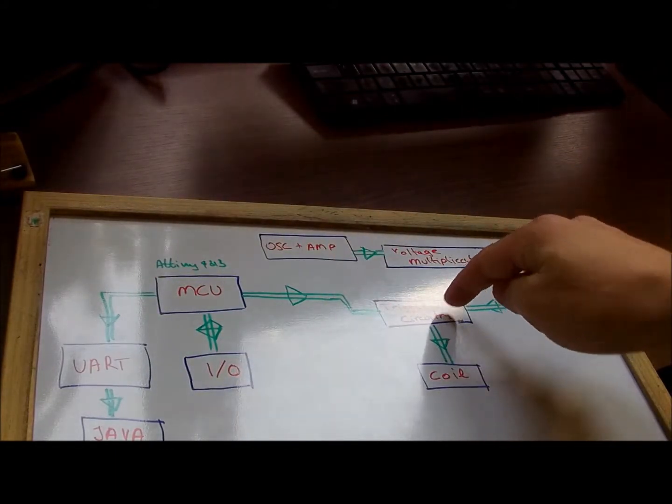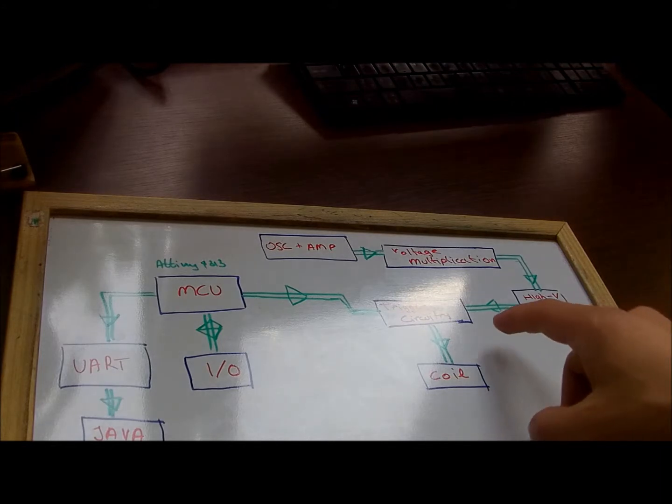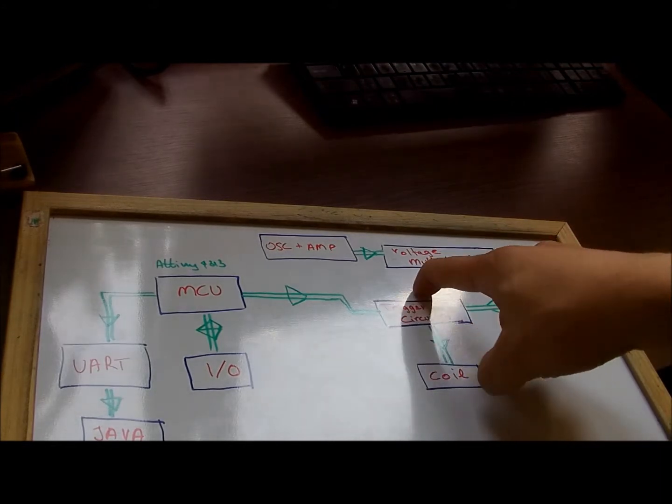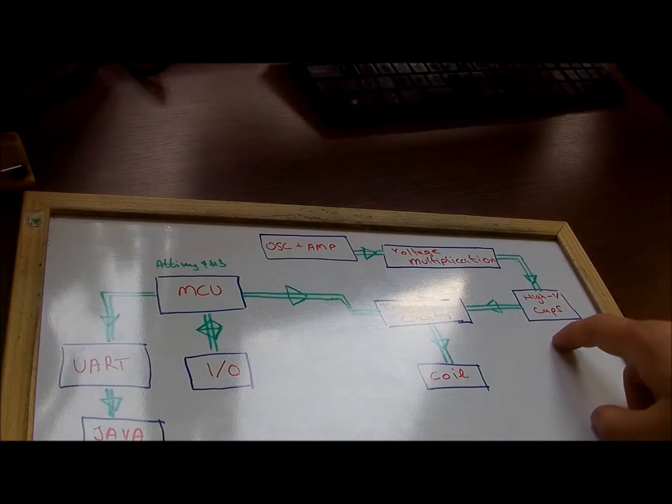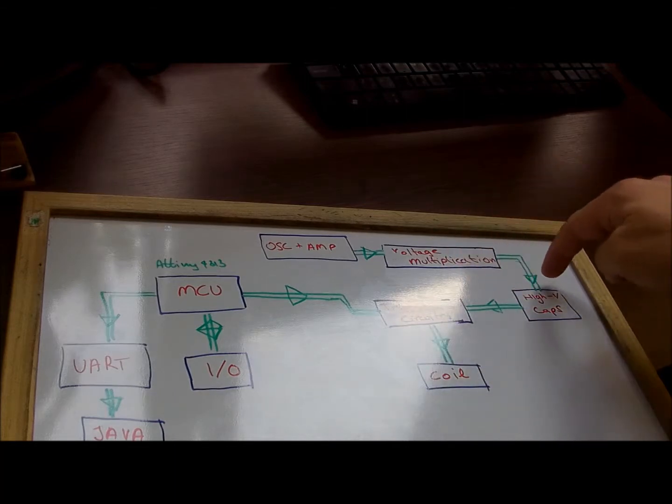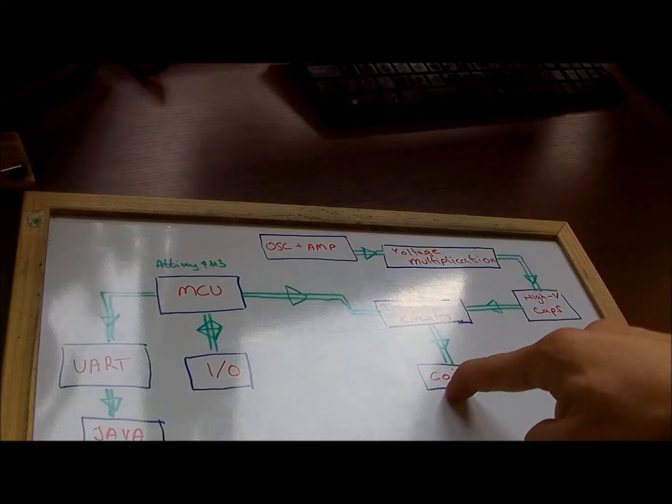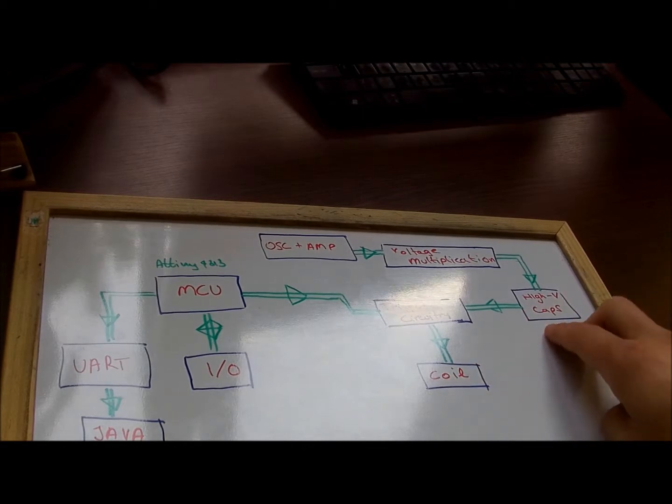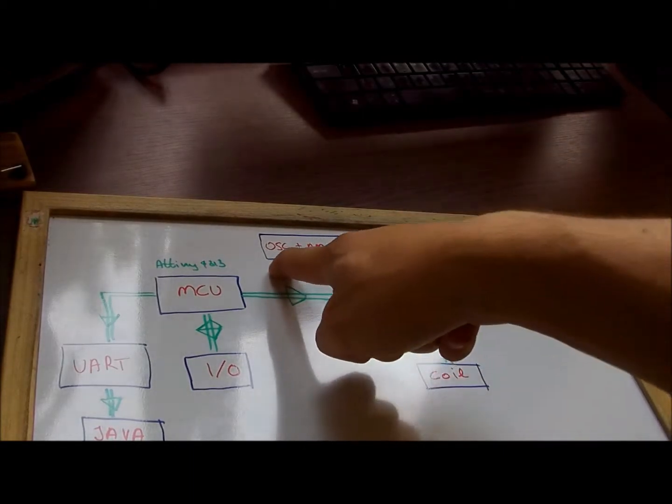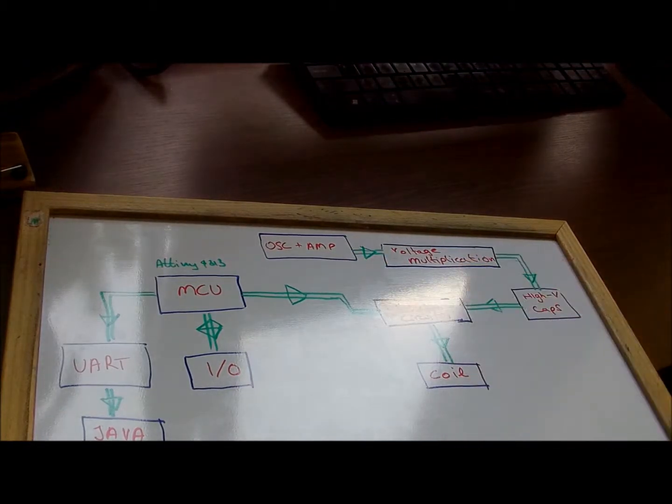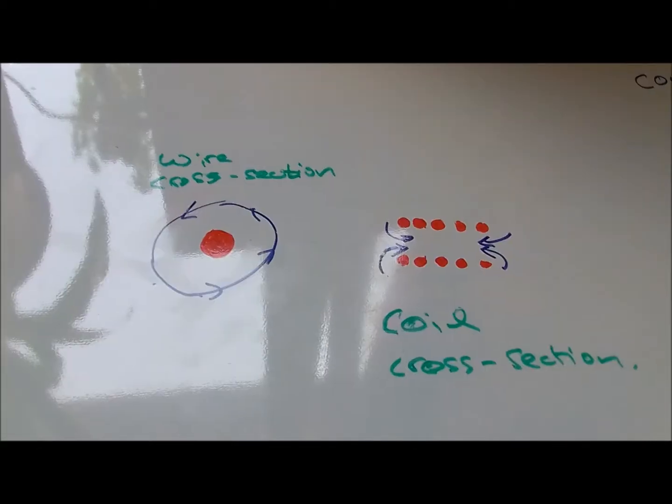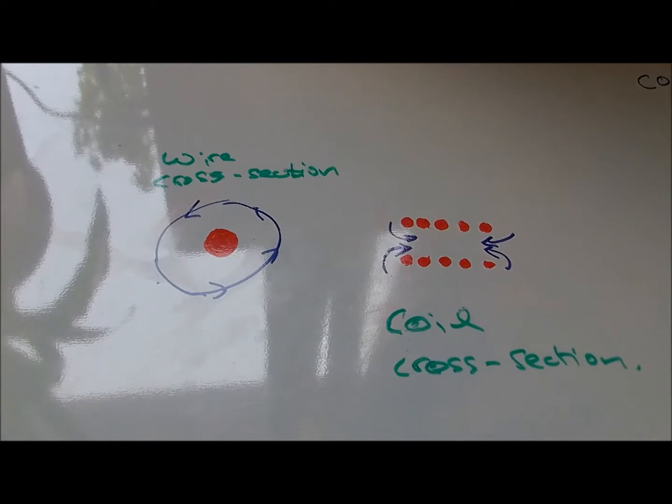Here I have the trigger circuitry. The microcontroller sends a pulse to the trigger circuitry, which basically consists of a few transistors which enable the correct voltages for the MOSFET and discharges the high voltage capacitors into the coil. To make that work we have an oscillator, an op-amp oscillator and amplifier which goes into voltage multiplication and charges the high voltage capacitors.